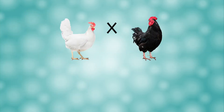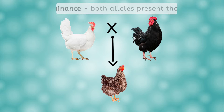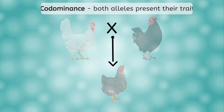A similar example occurs with chickens and the allele for black or white feathers. Heterozygous chickens are speckled, having a mixture of both black and white feathers. When both traits can be seen simultaneously, it is known as co-dominance. Though in some cases, it is difficult to distinguish between incomplete dominance and co-dominance.